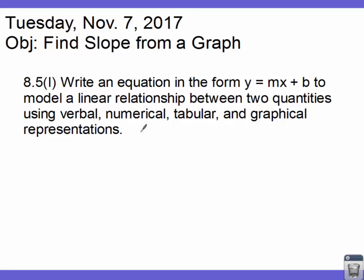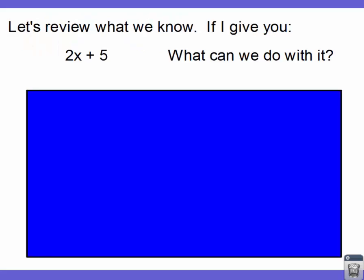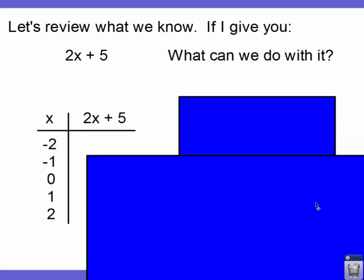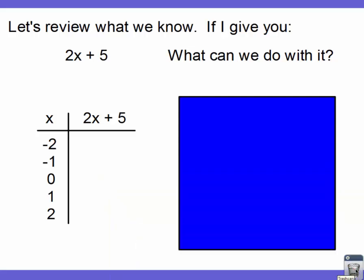Let's review what we know already. If I were to give you 2x plus 5, one thing you can do is create a t-chart. We know that the y-intercept — this number here — is the y value when x is zero. So if I have zero for x, I can just take this 5 and plug it right in.